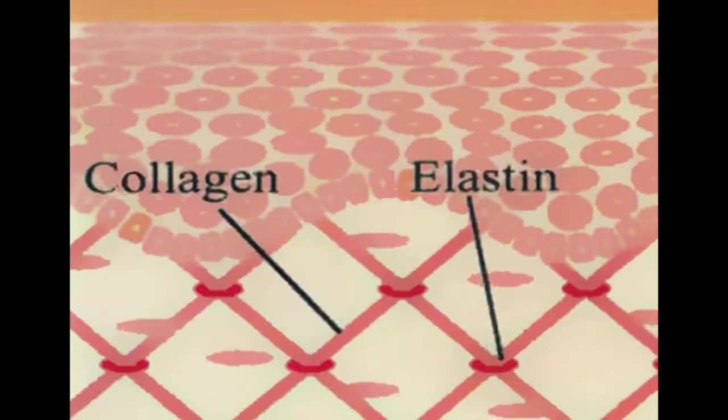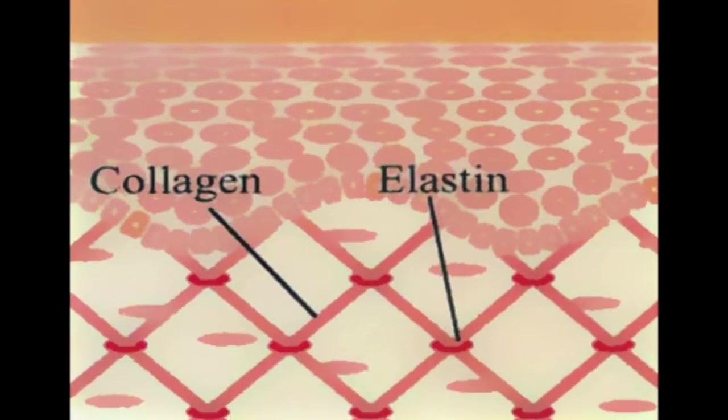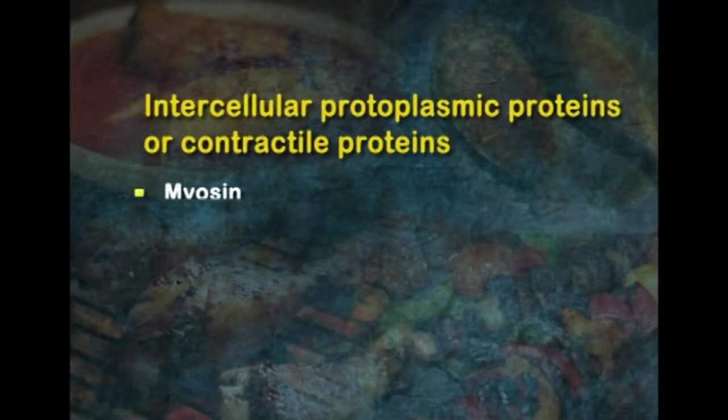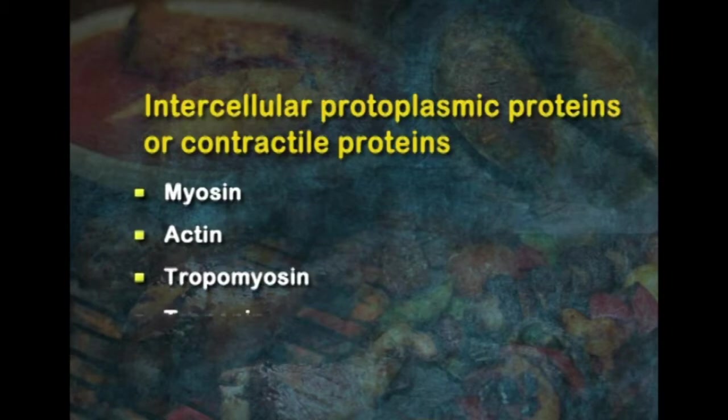Elastin is tougher than collagen and is a constituent of ligaments and tendons. It has elastic properties compared to collagen, which are necessary in the muscles and tissues of the neck, abdominal or intestinal wall, and arterial system. No change occurs in elastin when it is cooked, so its content is not of great importance from the point of view of cooking methods. Intercellular protoplasmic proteins, or contractile proteins, are chiefly composed of myosin — the major protein — along with actin, tropomyosin and troponin, which are found in small quantities.